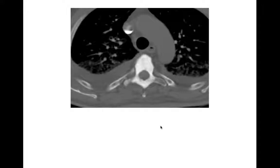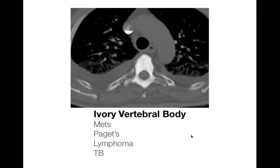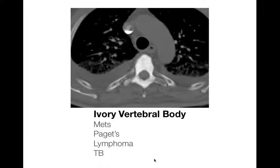Here's a classic differential for a very dense vertebral body — what we call an ivory vertebral body. Things to think about: metastasis is super common; lymphoma is fairly common. Paget's disease will also give you an ivory vertebral body, but one distinguishing feature is that Paget's tends to expand the vertebral body — look for that expansion, as it pushes you toward Paget's. TB or an indolent slow-growing infection can also cause this appearance.